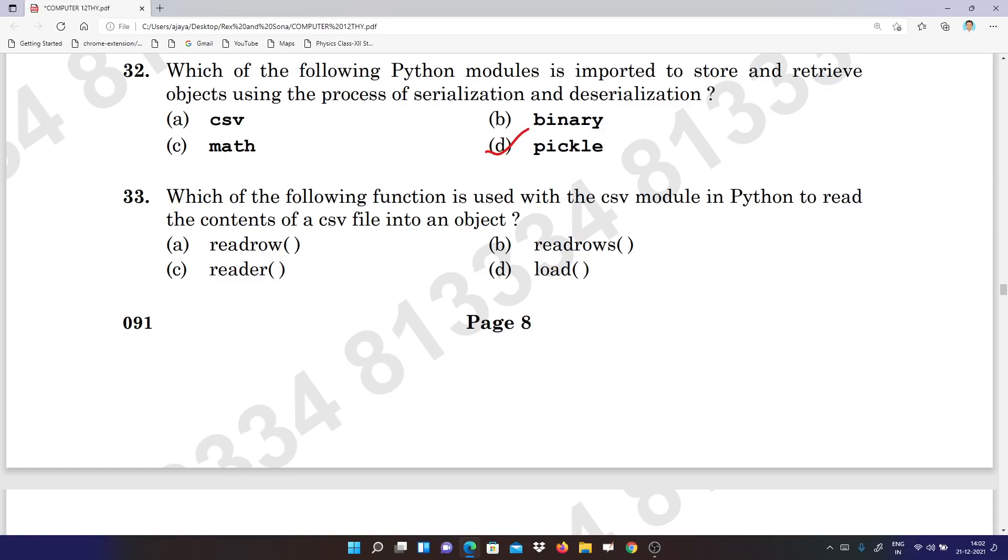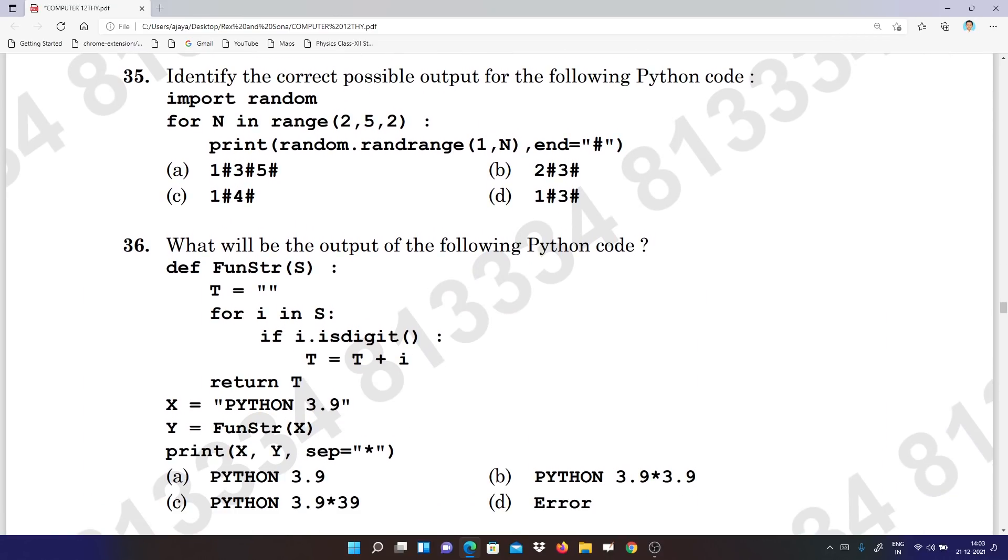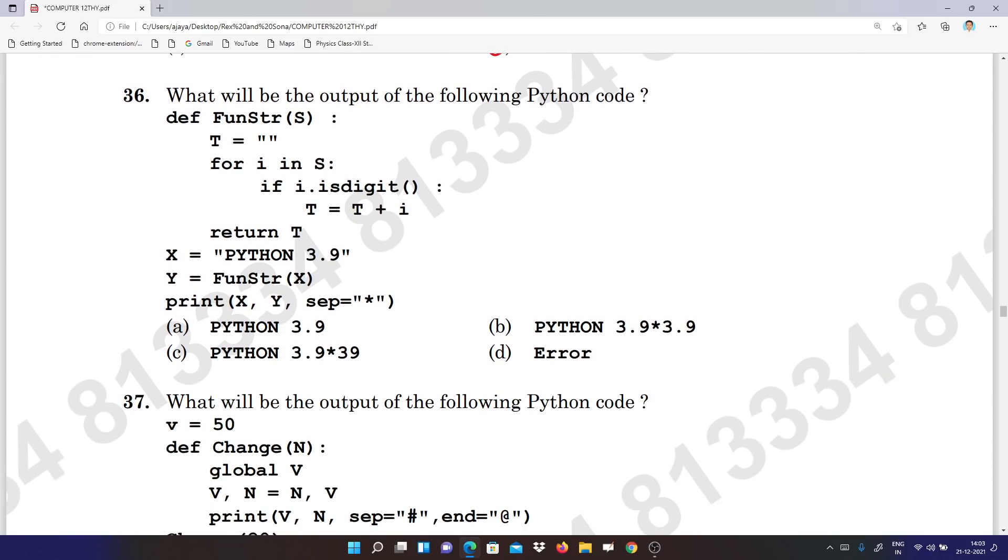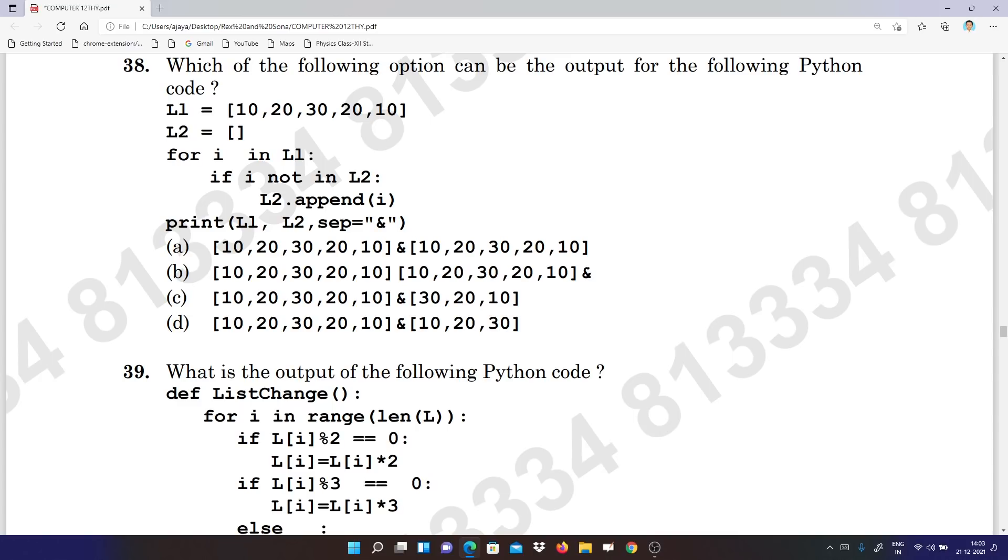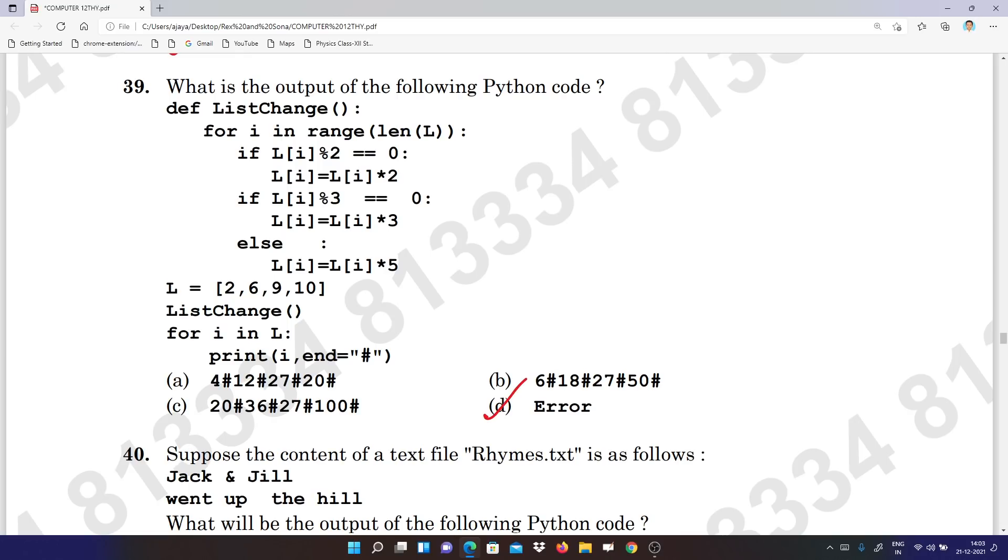Thirty-three: D. Thirty-four: C. Thirty-five: D. Thirty-six: D. Thirty-seven: A. Thirty-eight: D. Thirty-nine also here it is D.